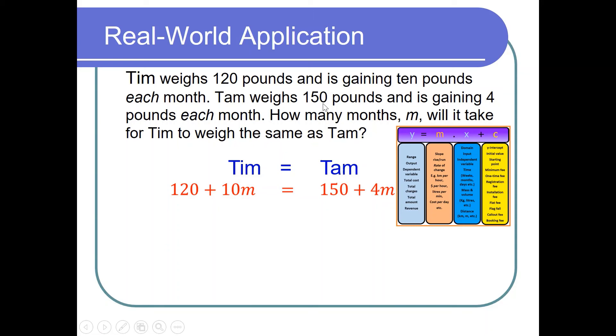For Tam, initially weighing 150 pounds, so 150 pounds plus is gaining 4 pounds each month, so 4 is the rate value, rate at which his weight is increasing, so plus 4m. M indicates months as indicated in the question. So don't confuse this m with slope.